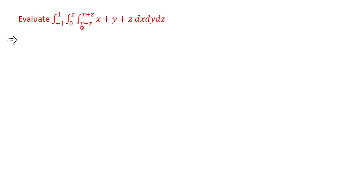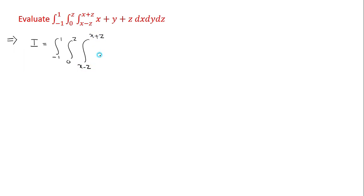First, we note that here the limits are functions of x and z. Therefore, we need to evaluate this integral first with respect to y. Let the given integral be I = ∫(minus 1 to plus 1) ∫(0 to z) ∫(x minus z² to x plus z) (x + y + z) dy dx dz.